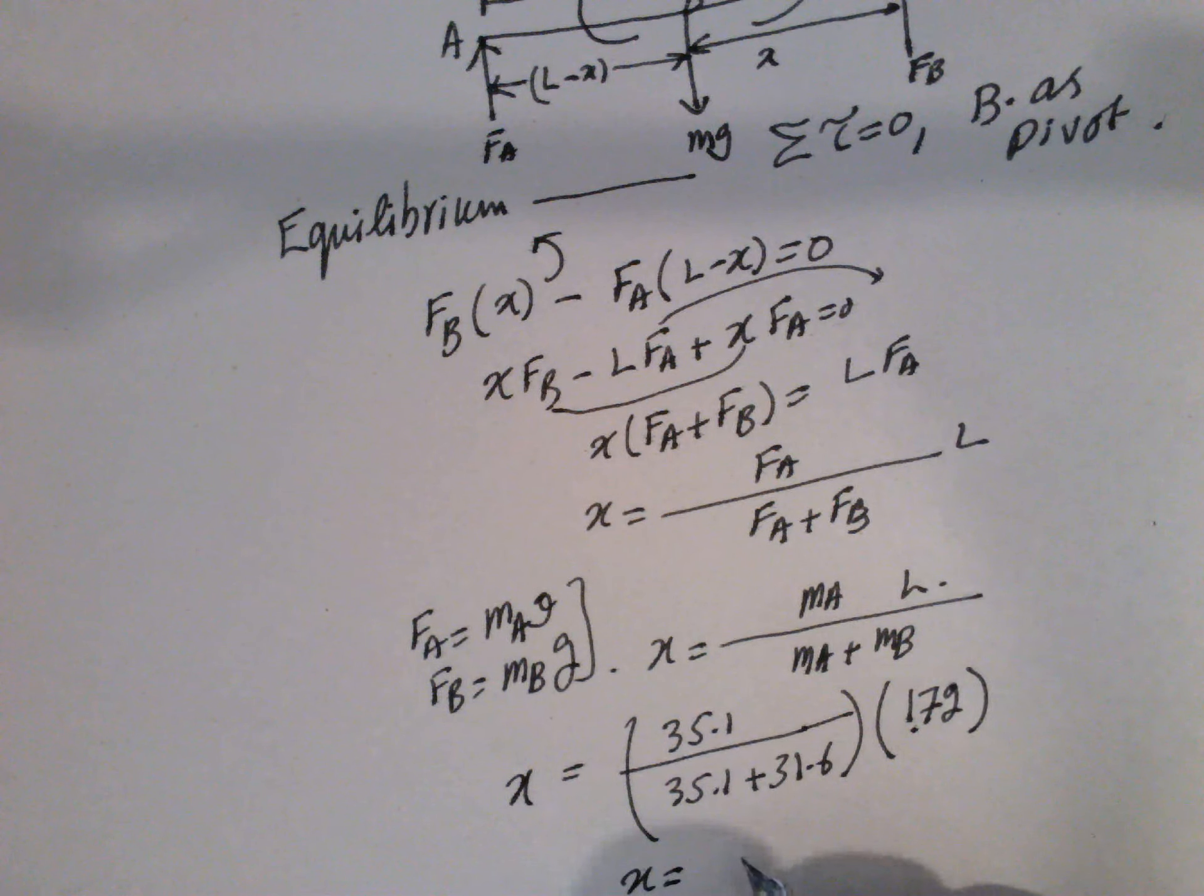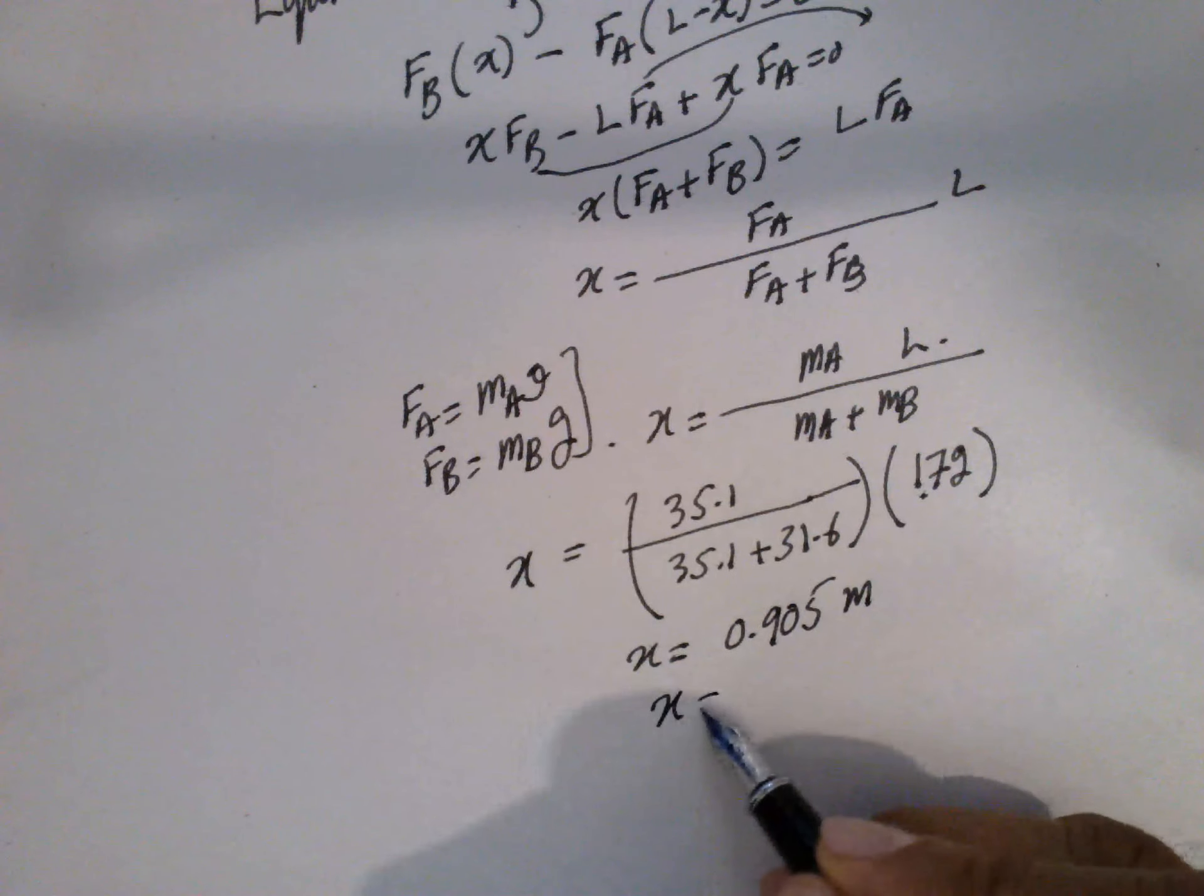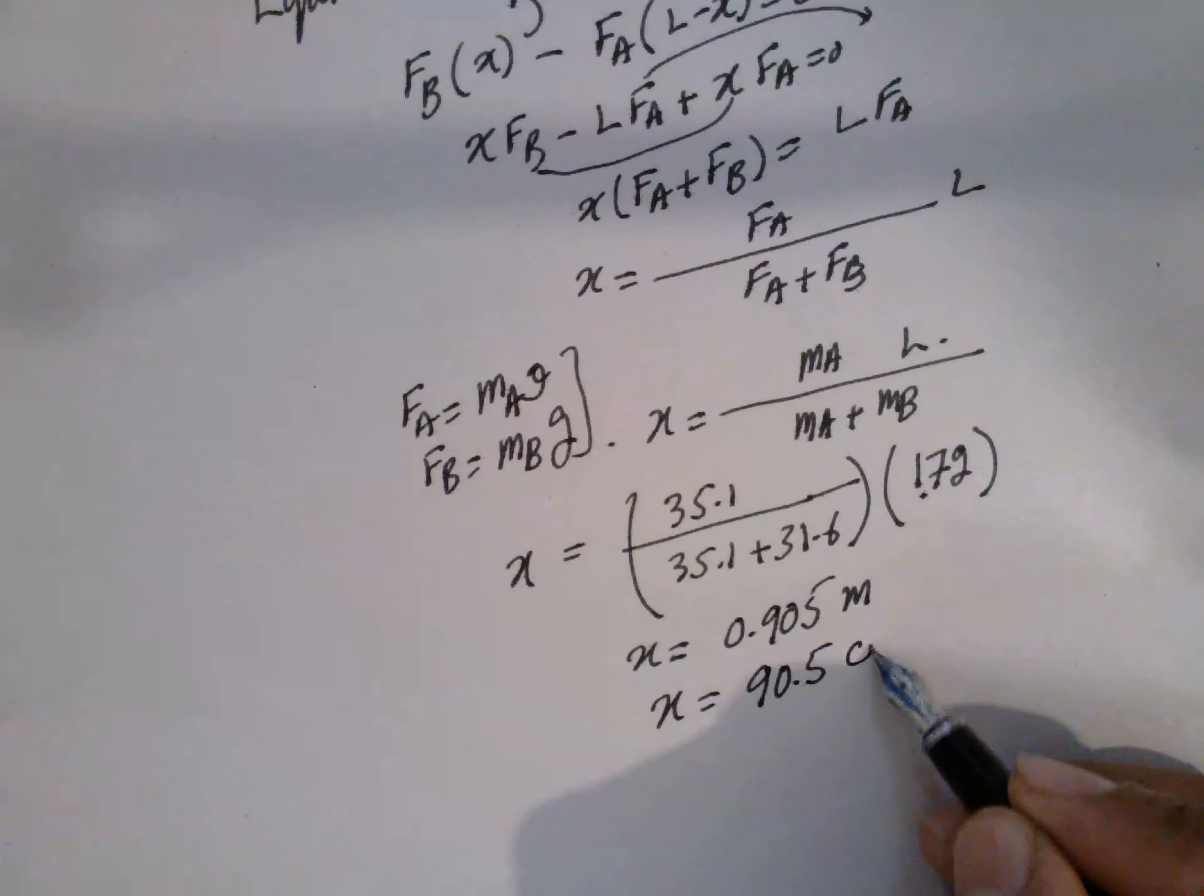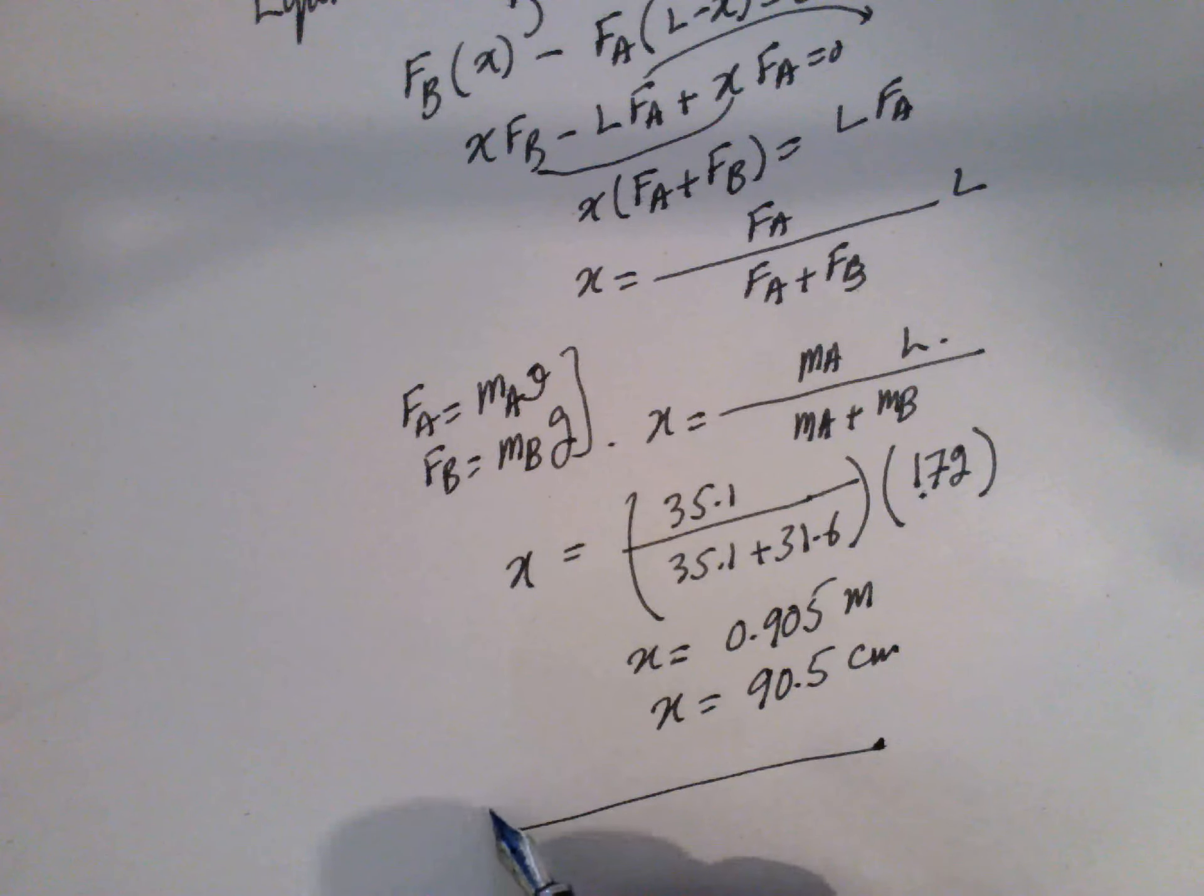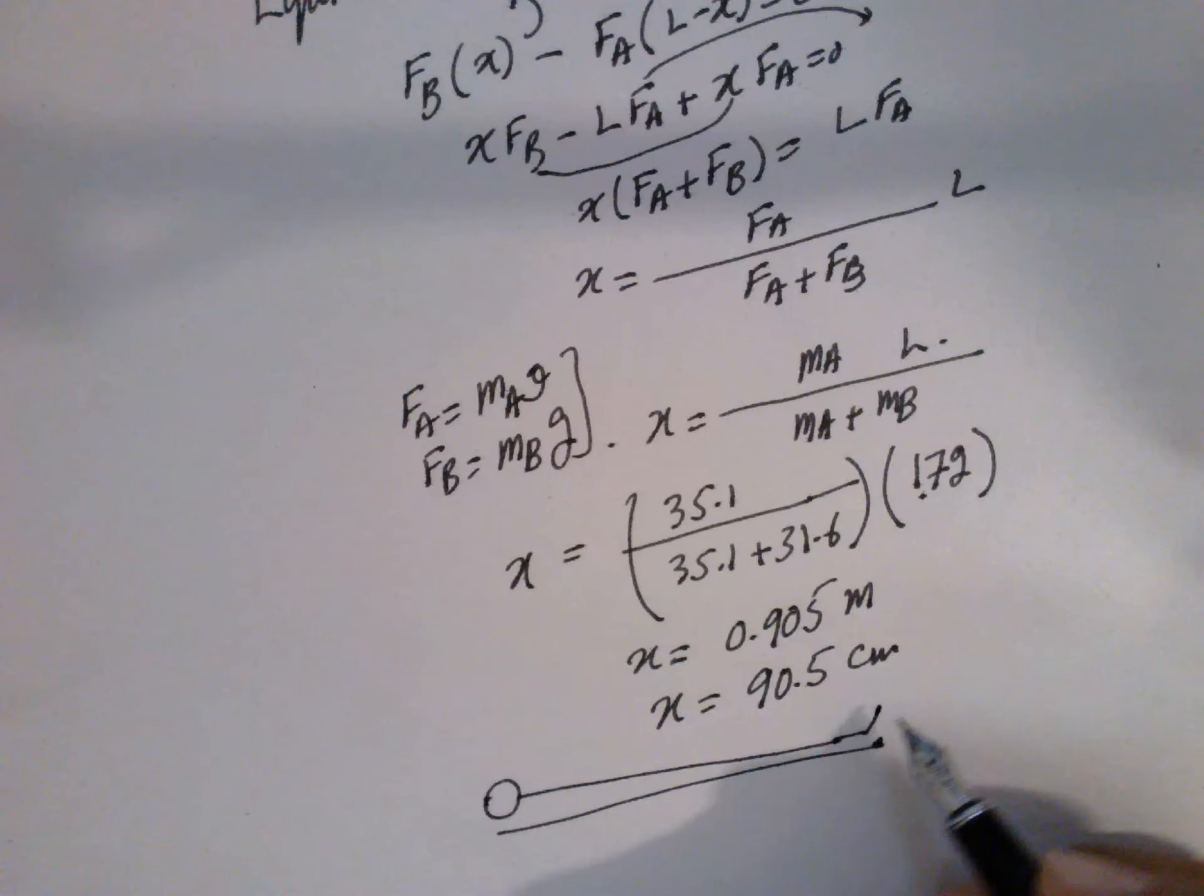So X is equal to 0.905 meters, or X is equal to 90.5 centimeters. So that means this is the feet, this is head, and these are the feet.